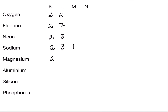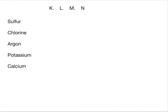Magnesium has an atomic number of 12, so 2, 8, and 2. Aluminium has an atomic number of 13, so 2, 8, and 3. Silicon has an atomic number of 14, so 2, 8, and 4. Phosphorus has an atomic number of 15, so 2, 8, and 5. Sulphur has an atomic number of 16, so 2, 8, and 6. Chlorine has an atomic number of 17, so 2, 8, and 7. Chlorine is a halogen, so it has 7 electrons in the outermost valence shell.